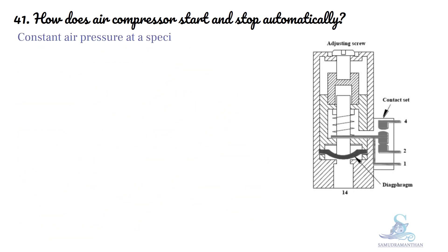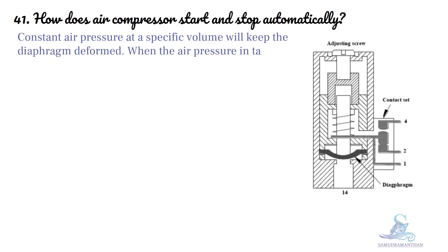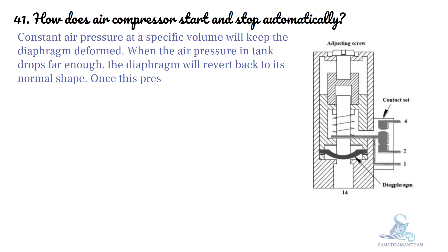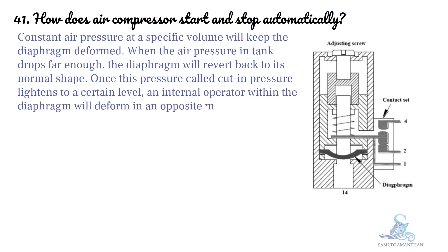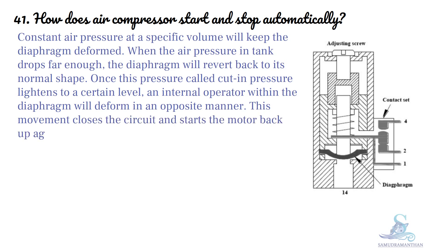Constant air pressure at a specific volume will keep the diaphragm deformed. When the air pressure in the tank drops far enough, the diaphragm will revert back to its normal shape. Once this pressure, called cut-in pressure, lightens to a certain level, an internal operator within the diaphragm will deform in an opposite manner, closing the circuit and starting the motor back up again.